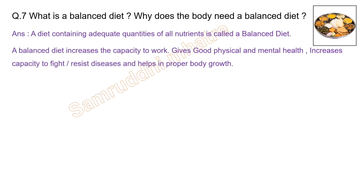Seventh question: what is a balanced diet and why does the body need it? A diet containing adequate quantities of all nutrients is called a balanced diet. A balanced diet increases the capacity to work, gives good physical and mental health, increases the capacity to fight and resist diseases, and helps in proper body growth.